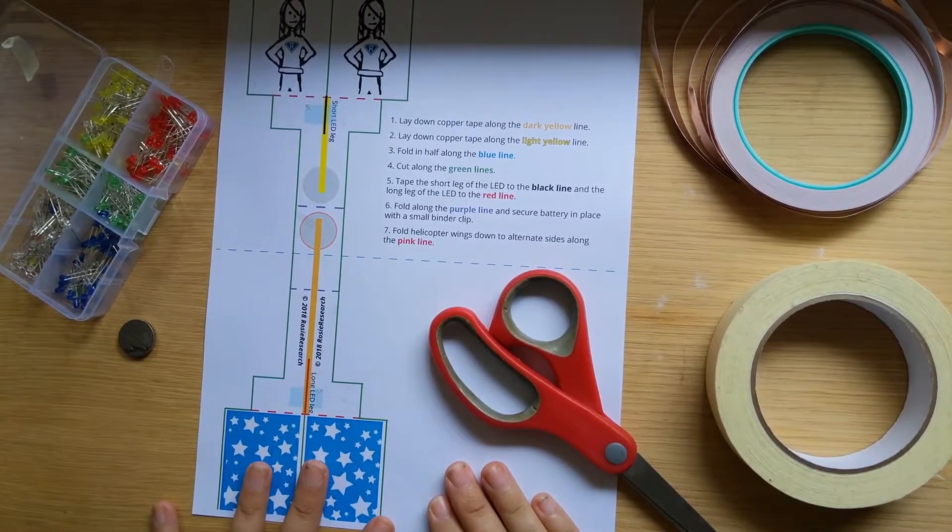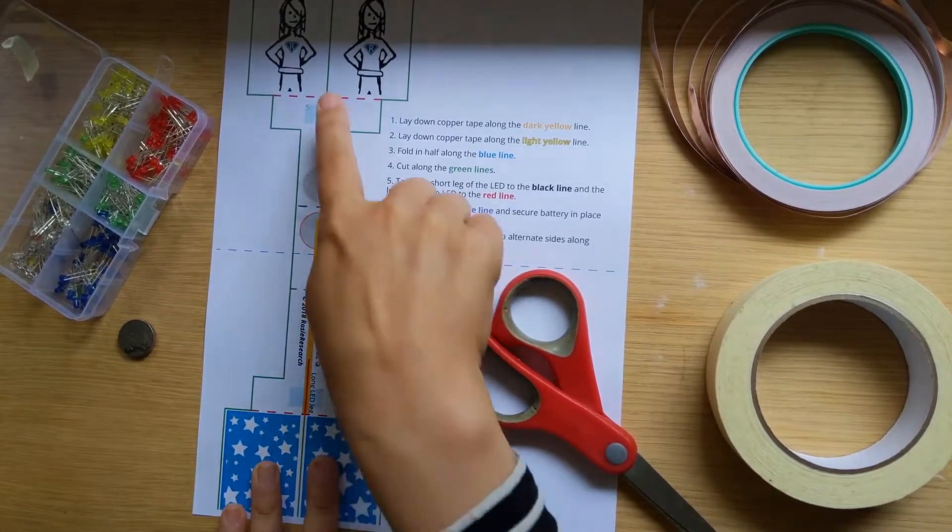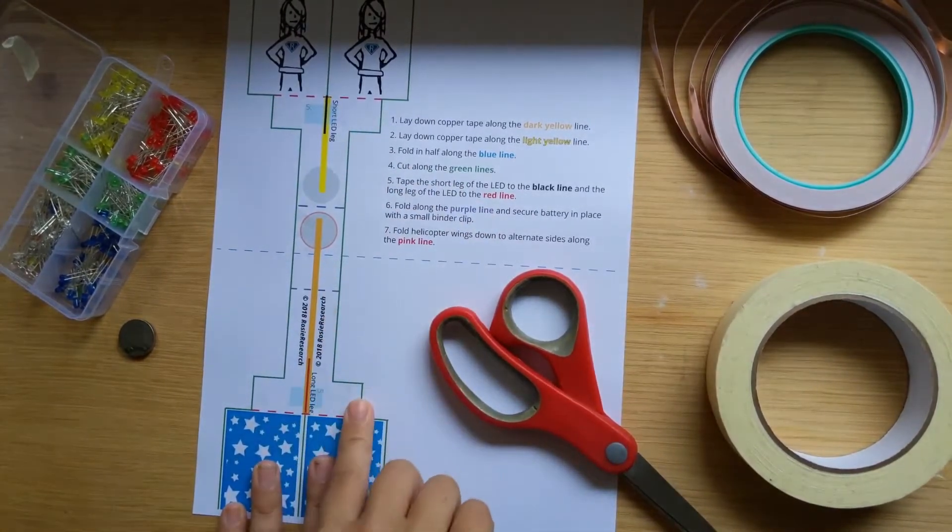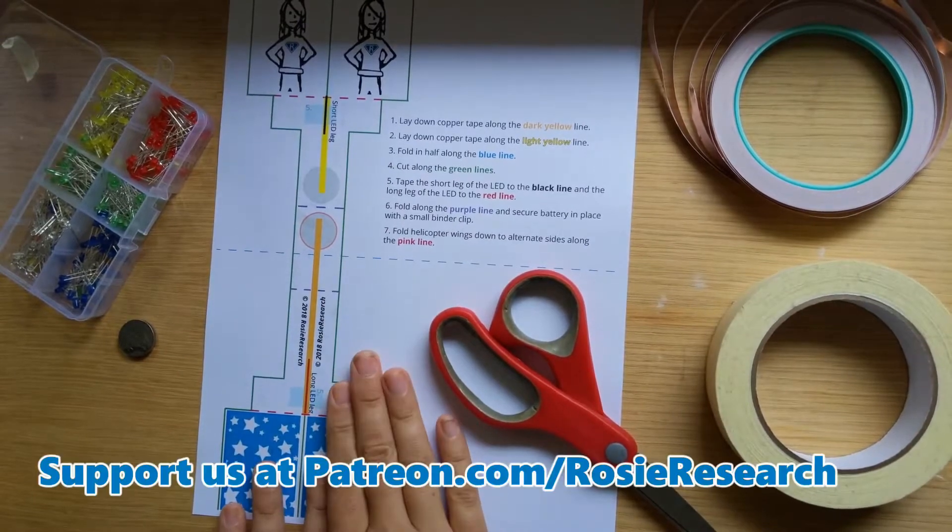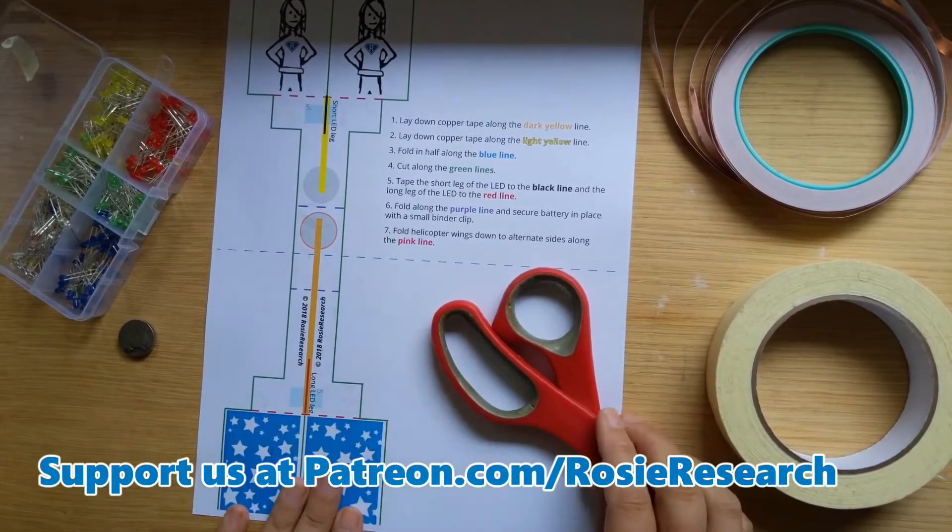You can find all the stuff in our YouTube channel in our paper circuits playlist. Today we are going to work on this little helicopter. It's a very simple paper circuit, a great one to start on. You can find it at our Patreon site. I am going to walk you through how to do it.